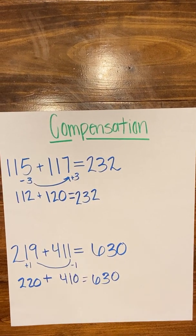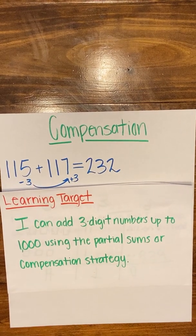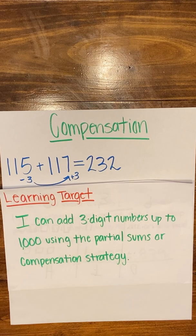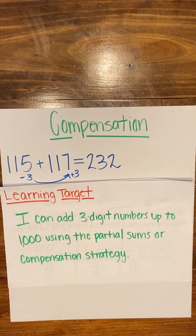Okay? So remember, today, our learning target was I can add three-digit numbers up to 1,000 using the partial sums or compensation strategy. And we looked at examples of both of those things just a moment ago.